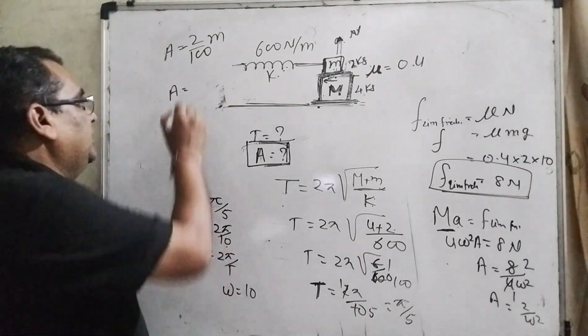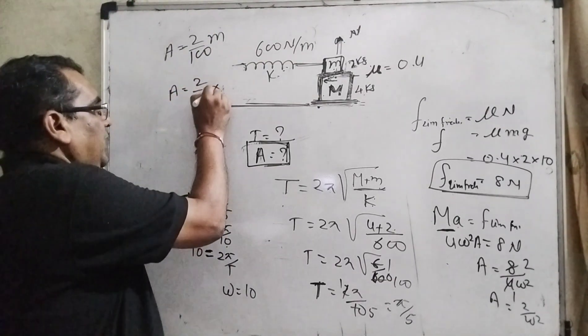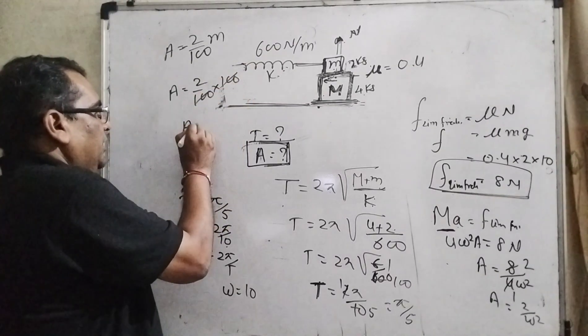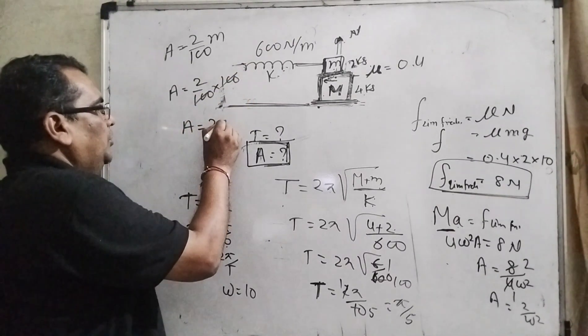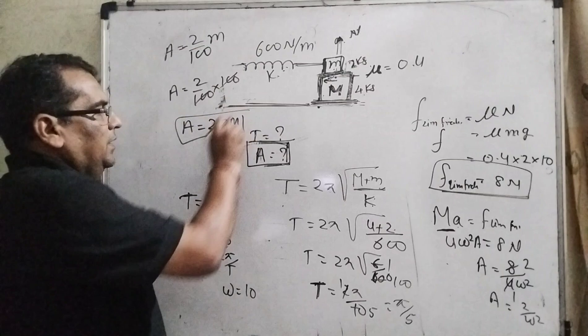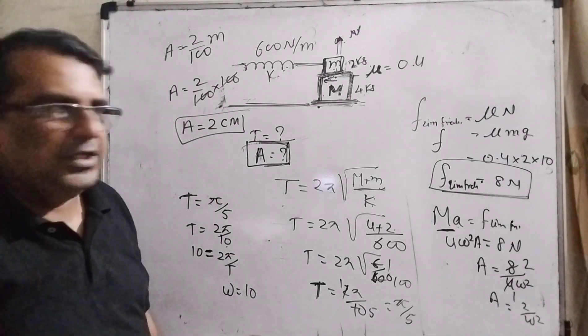So now, amplitude = 2/100. This is in meters. If we convert into centimeters, multiply by 100. So a = 2 centimeters. I hope you understood this problem.